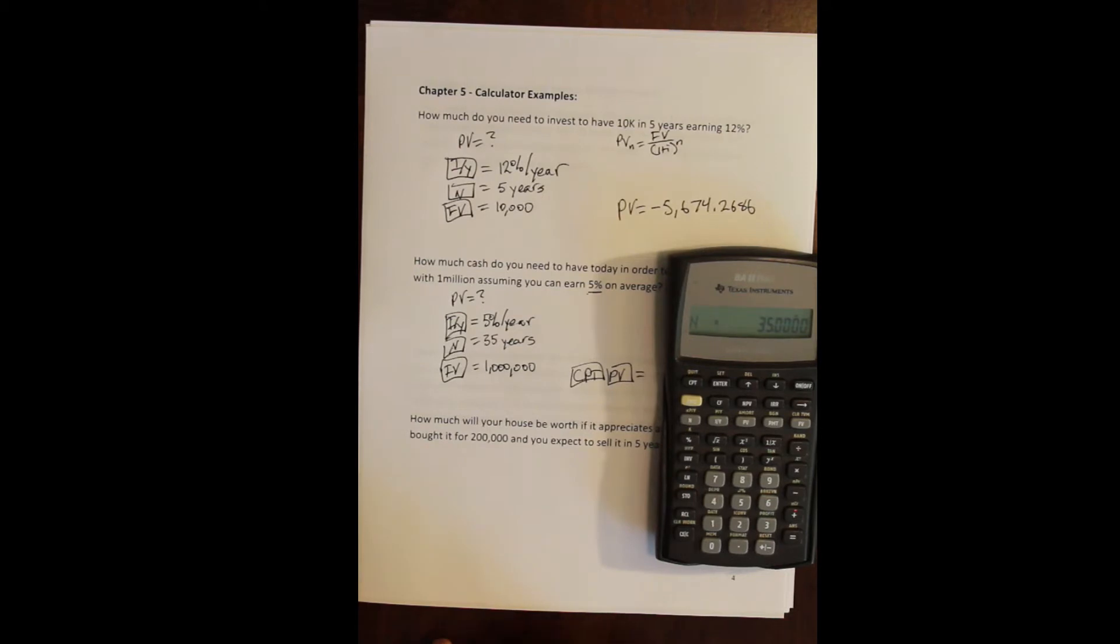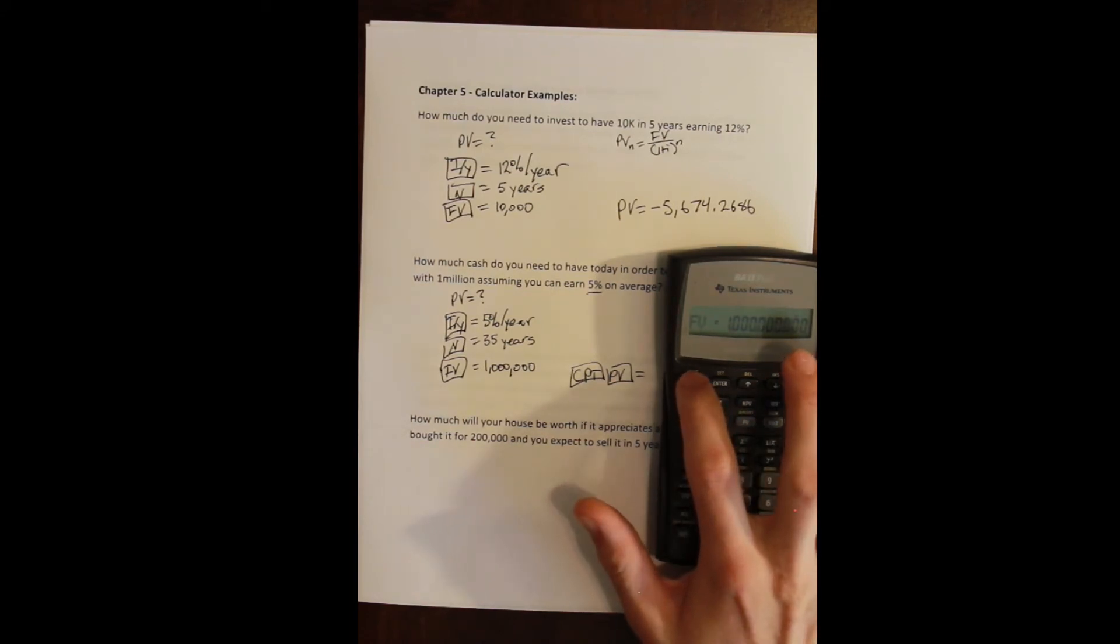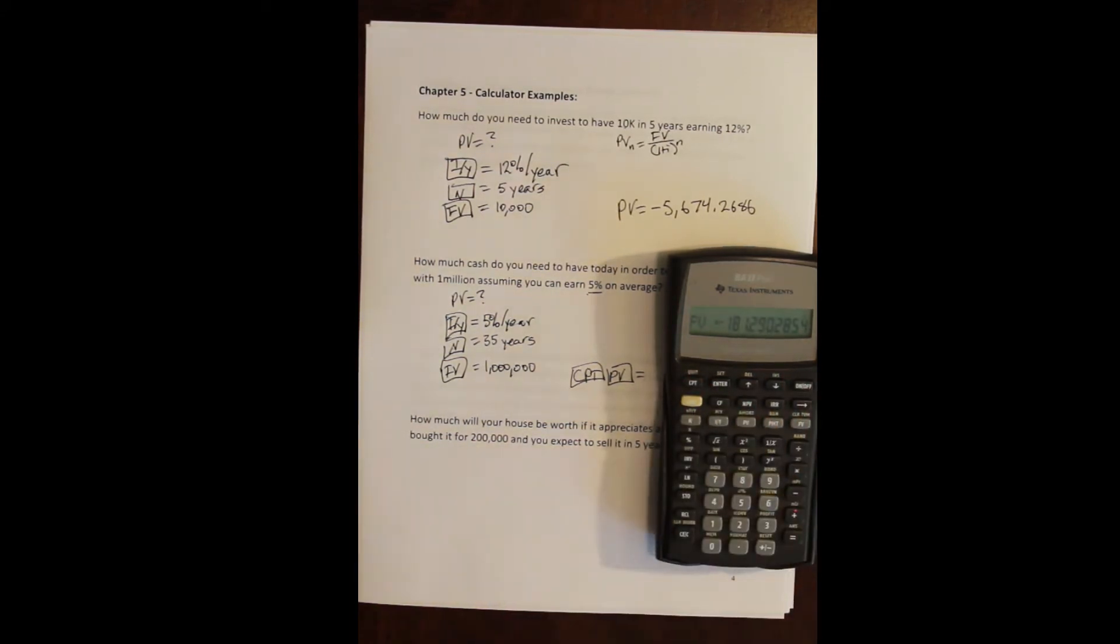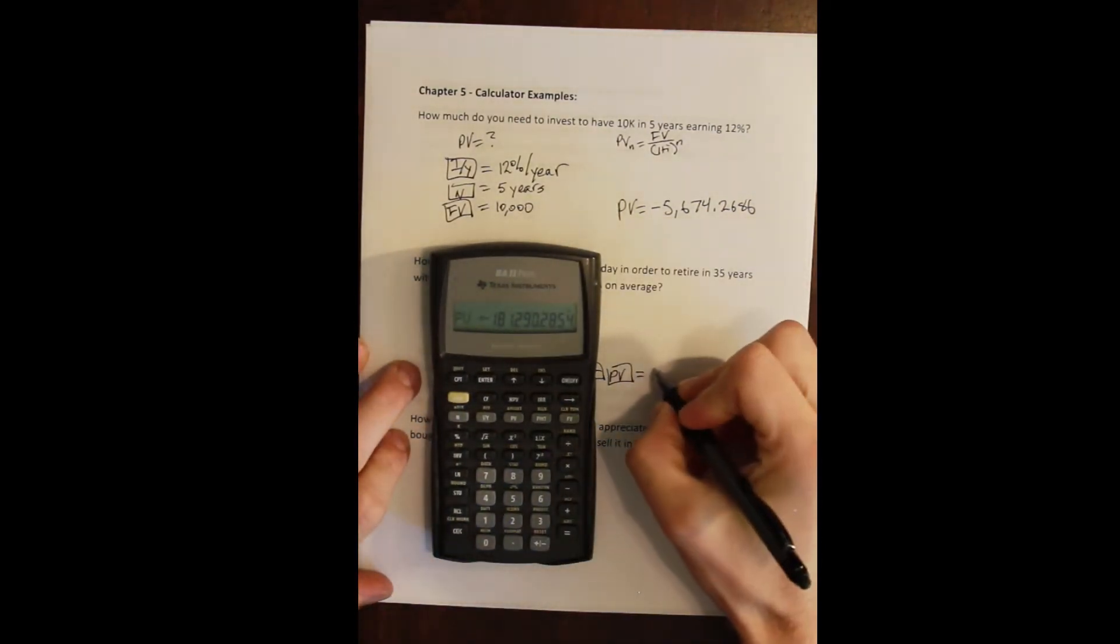Then 35 years, so 35 and N. The amount that we want to get to in our account is $1 million, so that is our future value: 1 million. Then to solve for present value, we simply press compute PV and we get $181,290.